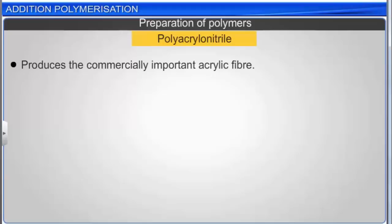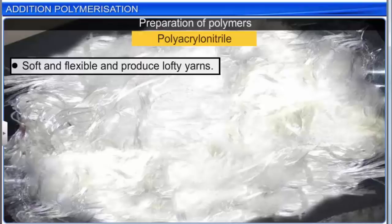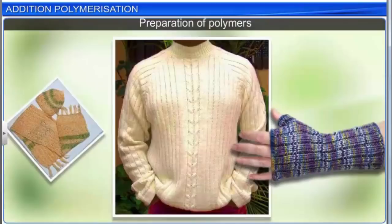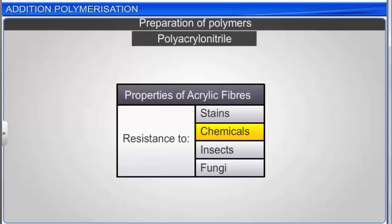Polyacrylic fibers include Orlon and Acrylan. These acrylic fibers are soft and flexible and produce lofty yarns. These properties closely resemble those of wool, hence acrylic fibers are often used to make sweaters and other pieces of apparel. Acrylic fibers have good resistance to stains, chemicals, insects, and fungi.